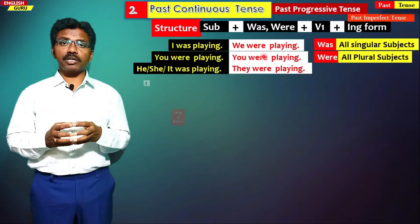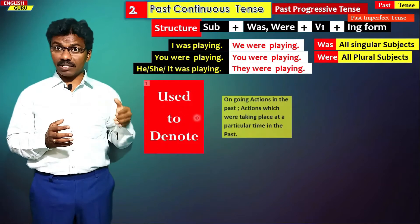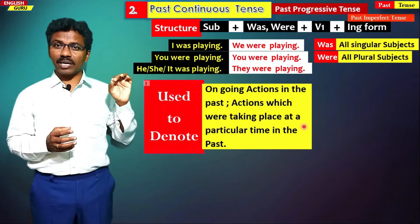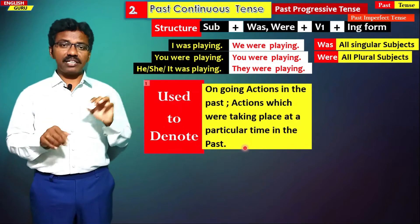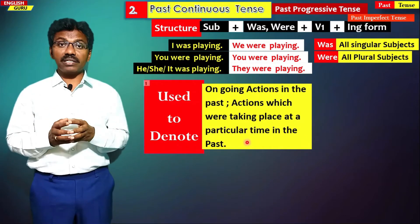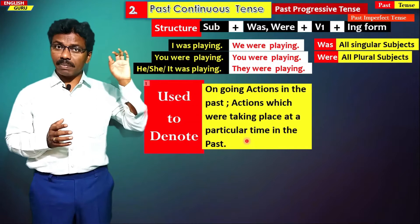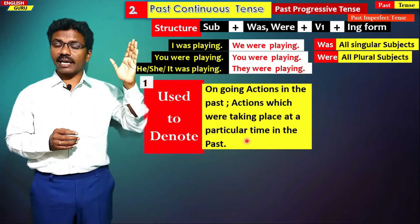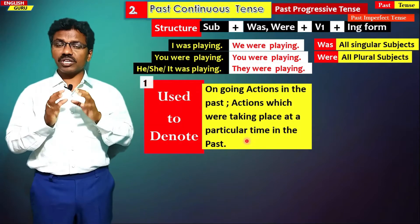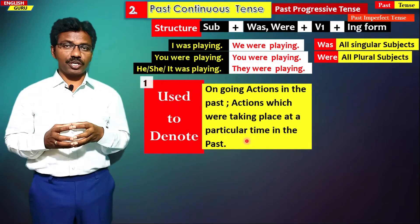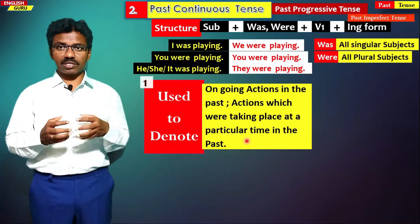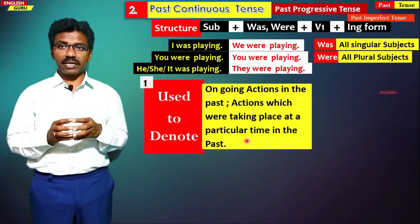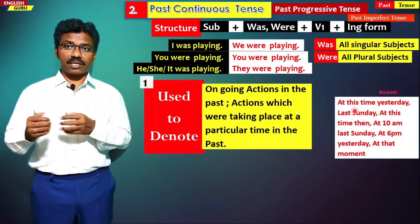This particular tense is used for ongoing actions in the past — actions which were taking place at a particular time in the past. Right now they are not taking place, but they were continuing at a particular time in the past. For such situations we use past continuous tense. There are certain keywords used in this tense: